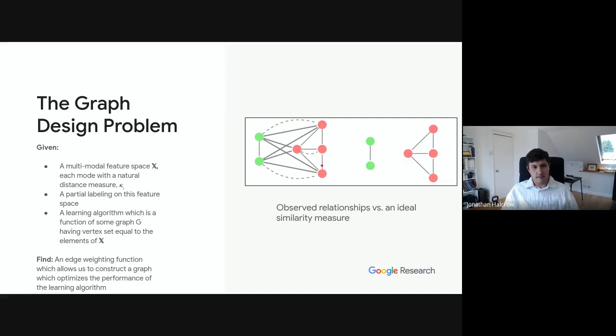So we call this problem of selecting the graph the graph design problem. And so we assume that for this problem, we're given some multimodal feature space X, and each mode has some natural distance measure kappa. So an example of what this might be is, say, you have a catalog of a bunch of products. Each of these products have a bunch of different type of features associated with them. You might have some metadata and then some simple distance measure on just the metadata. You might also have some other similarity measures on the content of the items in the catalog, for example, like similarity between their images. And then you might even also have some other sort of co-purchase type information. So in addition to this feature space, we're given some partial labeling on this feature space. And we've chosen a particular learning algorithm that's a function of a graph on these vertices in this multimodal feature space. And what we'd like to do is find an edge weighting function which allows us to construct a graph which gives us optimal performance for the learning algorithm.